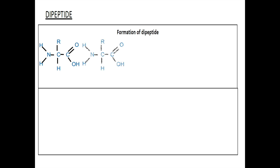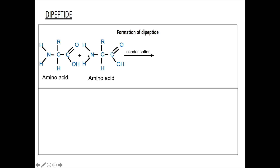To draw the formation of dipeptide, first draw two general structures of amino acids side by side. Since we know that dipeptide is formed via condensation, we know that we need to remove a water molecule. Water molecule is H2O. So we will remove the hydroxyl group from the carboxyl group of one amino acid, and a hydrogen from the amino group of the other amino acid,